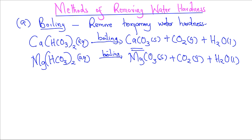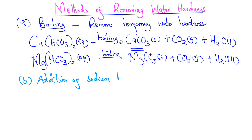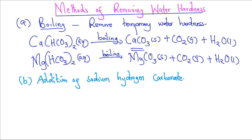The second method of removing water hardness is the addition of sodium carbonate. When sodium carbonate is added, the calcium ions and magnesium ions get precipitated. This method removes both types of water hardness.